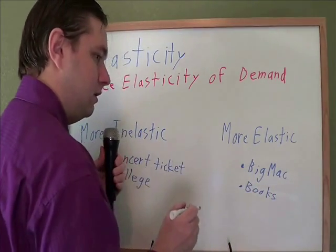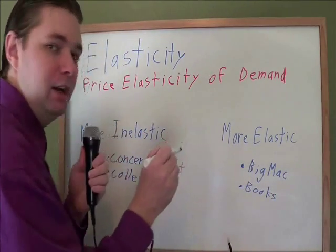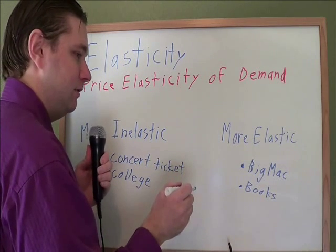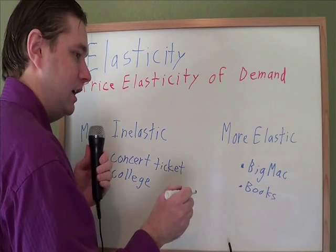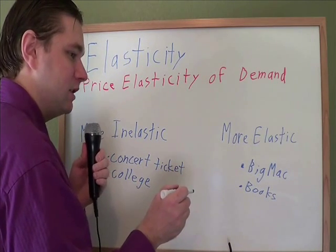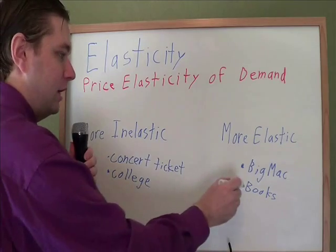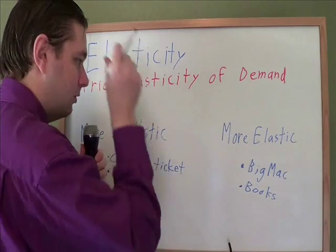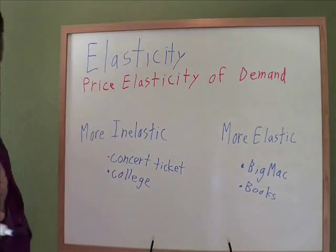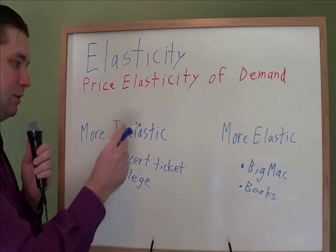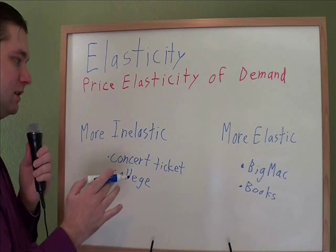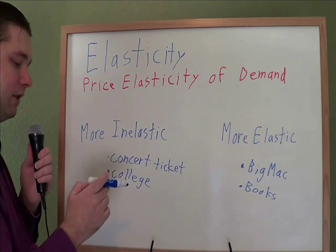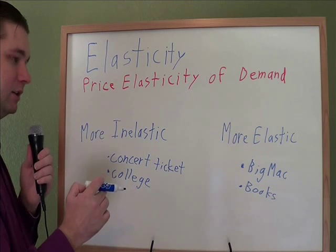That means you care more about the price of books. When books are on sale, you'll go out and buy a whole lot more of them. If books get more expensive, you'll just start buying movies or something else instead. The price really, really matters for books, so they are more elastic. And that's pretty much all that elasticity is — you just want to know how much the price matters.